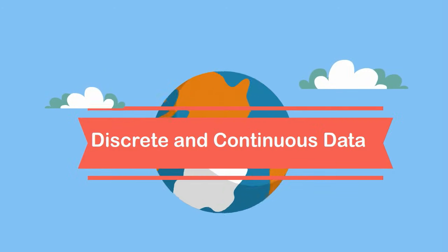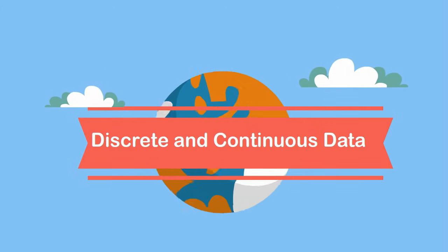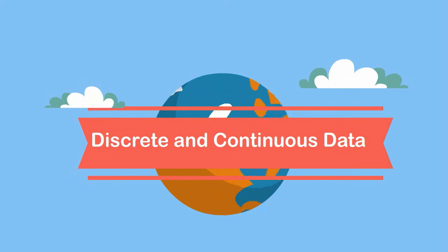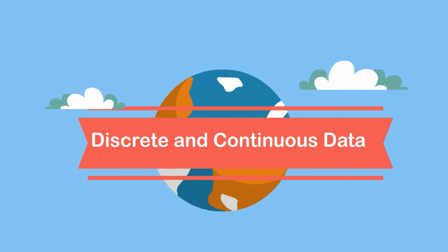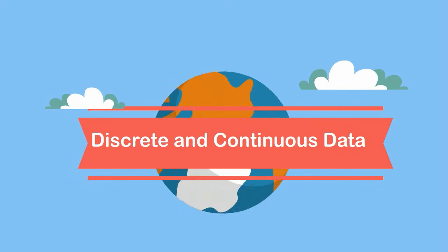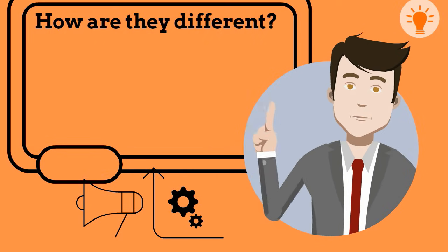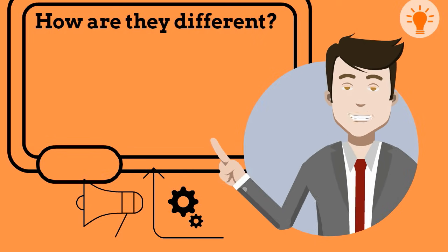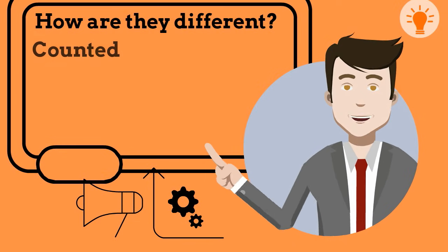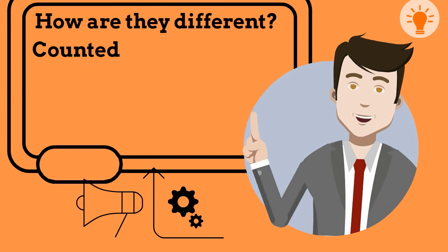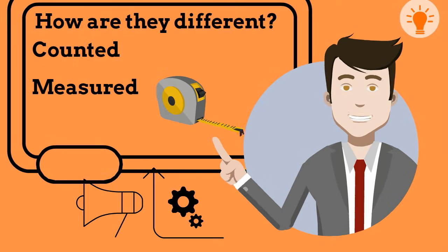Welcome to Moving Math and Science. In this video I'd like to talk about two types of data: discrete and continuous data. How is discrete data different than continuous data? In simple terms, discrete data is counted and continuous data is measured.